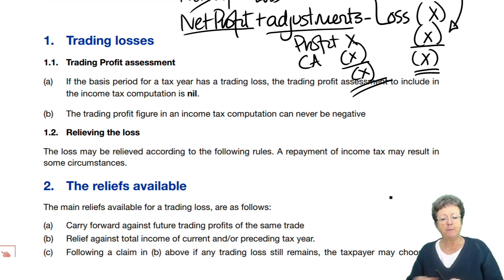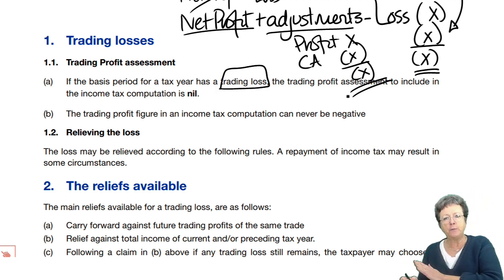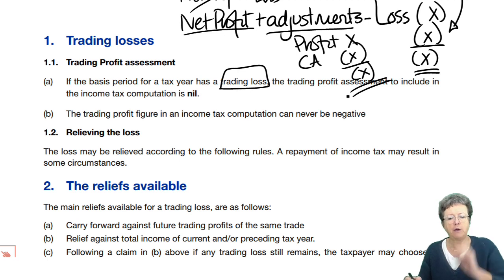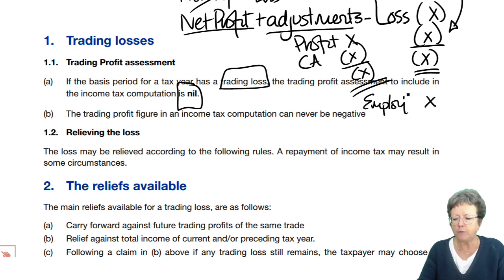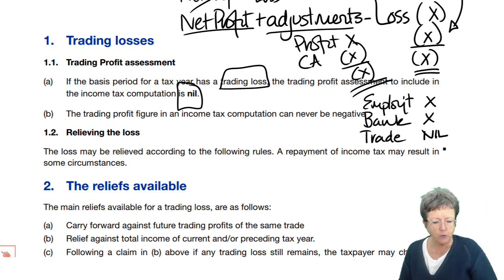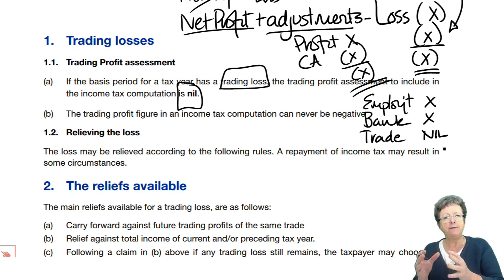So, if in the basis period for the tax year you do have a loss, then in the income tax computation you put zero — nil. You could have employment income from a salary, you could have bank interest, and then if you've got a trade, you would write nil or zero. It's never a negative — never a negative. What you have to do is put the nil in there and then give relief for the loss afterwards.